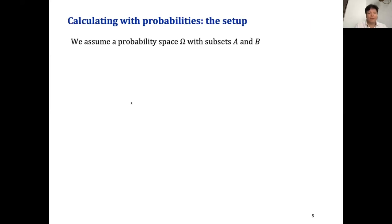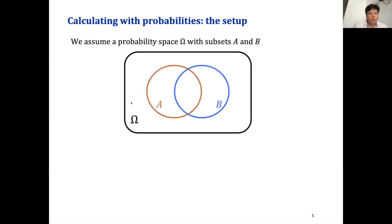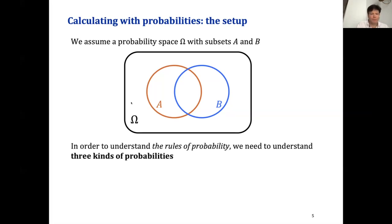How do we calculate with probabilities? One way to introduce this is to look at different sets. We have a set of possible observations called omega. Within that probability space omega, we have a subset A and a subset B, and they overlap to a certain degree.